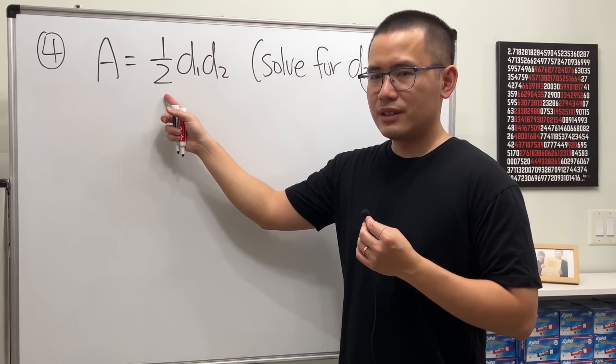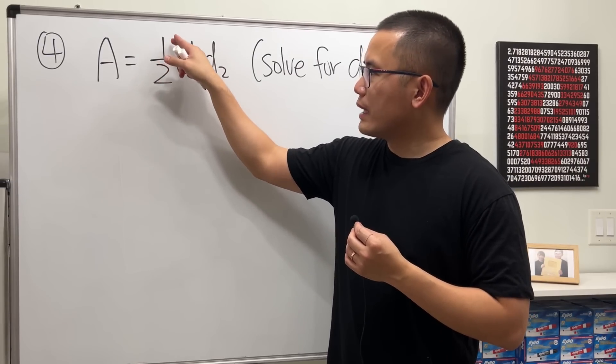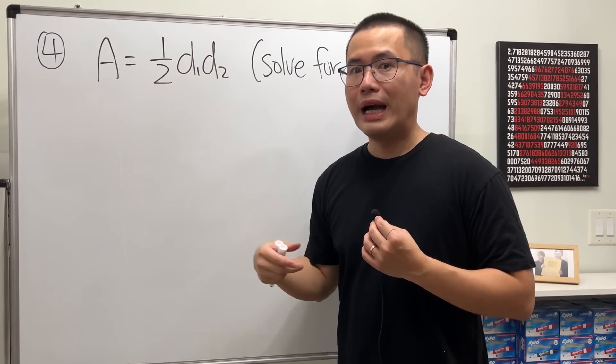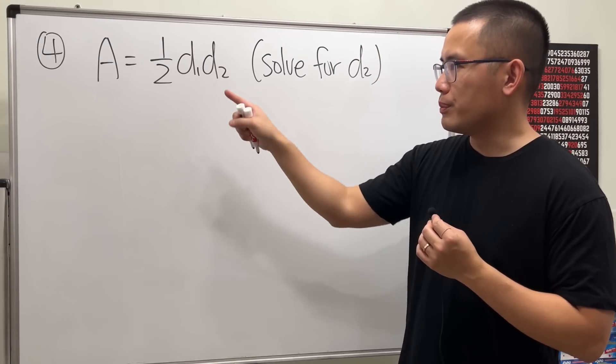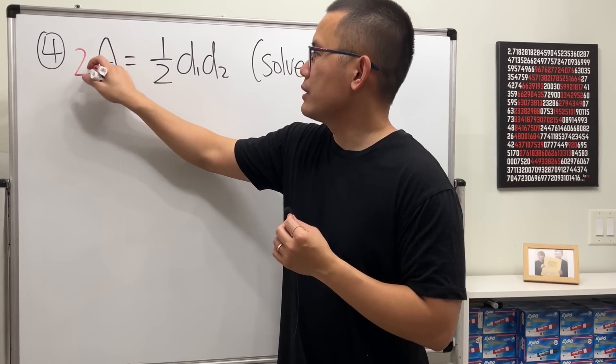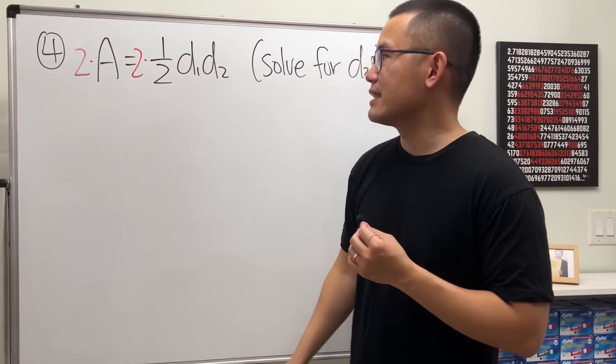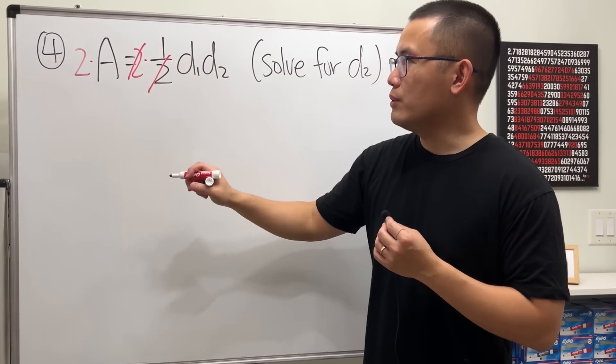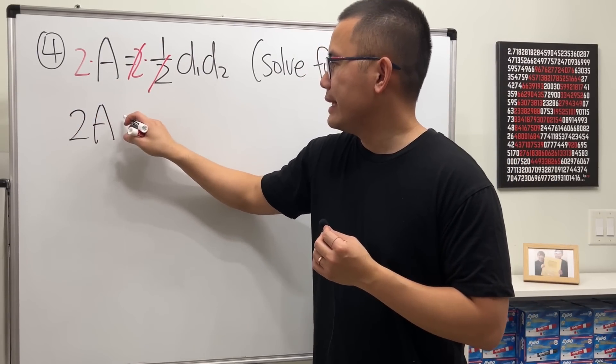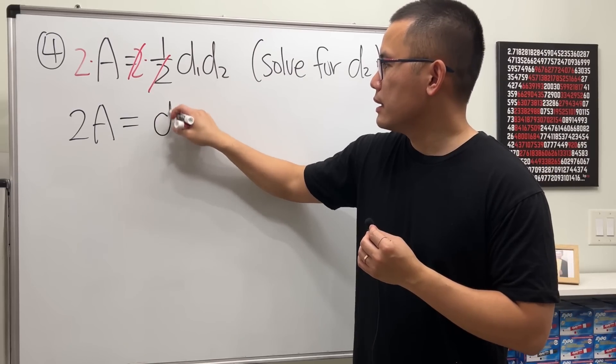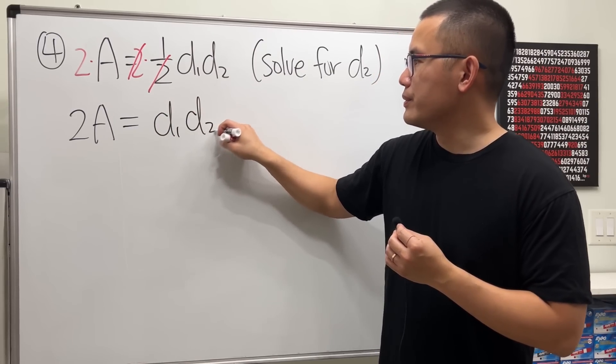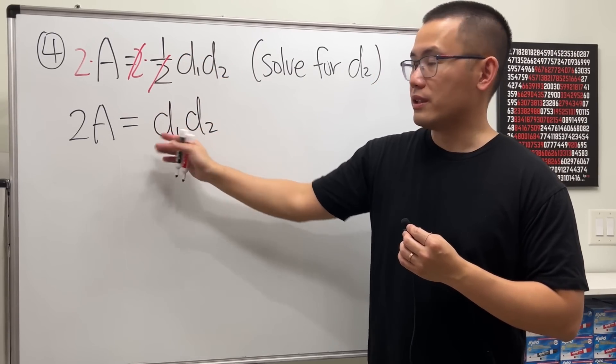Let's get rid of the 1 over 2 first. The 1 over 2 is like 1 divided by 2, so we will have to multiply by 2 to both sides. So put a 2 times this and 2 times that. That way, this and that can cancel. So we get 2A equals d1 times d2. The 1 times this, the 1 doesn't matter.